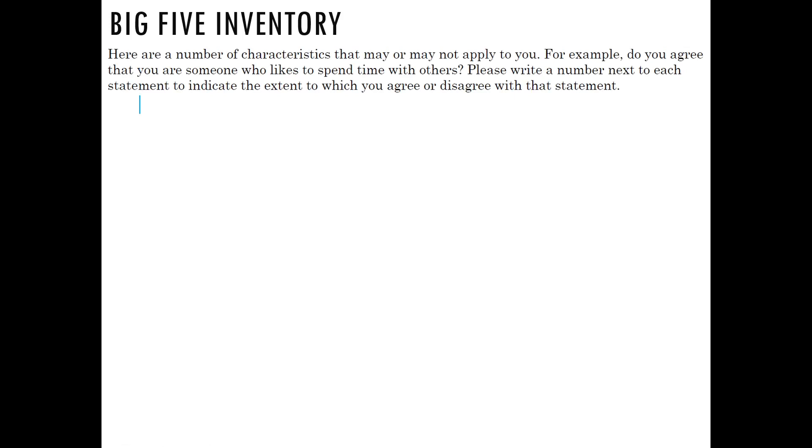Here are a number of characteristics that may or may not apply to you. For example, do you agree that you are someone who likes to spend time with others? Please write a number next to each statement to indicate the extent to which you agree or disagree. One means you strongly disagree, two you disagree a little, three you neither agree nor disagree, four you agree a little, and five you agree strongly. Don't give half numbers like two and a half—that's not helpful for summing your score. Just commit and pick one number. Don't leave any items blank, or your score for that scale will be completely uninterpretable.